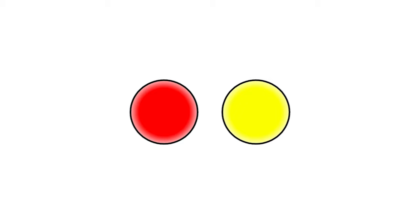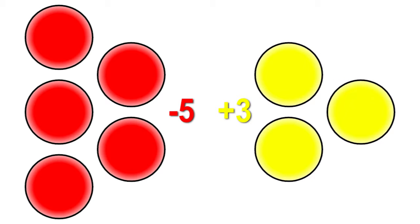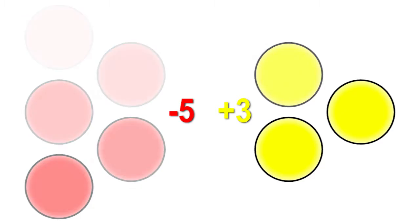Manipulatives can be used to show positive and negative numbers. We can use red counters to represent negative numbers and yellow counters to represent positive numbers. So five red counters would represent negative five, and three yellow counters would represent positive three. Have your child count out the counters for some different scenarios — they will have to choose whether it is a positive or negative number they are representing, then have them actually write the number.